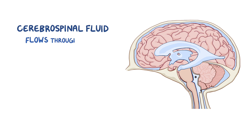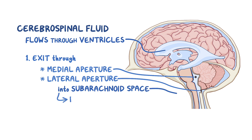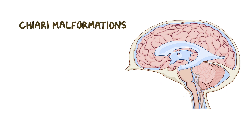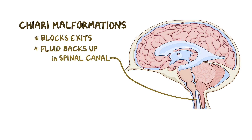Normally, cerebrospinal fluid would flow through the four ventricles of the brain, and after the fourth ventricle, the fluid would have two options. It could enter the ventricular system through openings called the medial and lateral apertures and into the subarachnoid space where it's reabsorbed. Alternatively, the fluid could go into the spinal canal. In Chiari malformations, however, the displacement of the cerebellum ends up blocking the openings where cerebrospinal fluid would exit into the subarachnoid space. As a result, the fluid backs up within the spinal canal, eventually causing the spinal canal to widen, and this leads to syringomyelia.